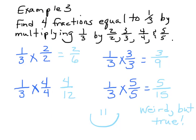So let's go ahead and go to example three: to find four fractions equal to one third by multiplying one third by two halves, three thirds, four fourths, and five fifths. Remember, two halves equals one, three thirds equals one, four fourths equals one, five fifths equals one. One third times two over two: one times two is two, three times two is six — one third and two sixths, same thing. Three thirds: one times three is three, three times three is nine — one third and three ninths, same thing. Four fourths: one times four is four, three times four is twelve — one third and four twelfths, same thing. Five fifths: one times five is five, three times five is fifteen — five fifteenths and one third is the same thing.